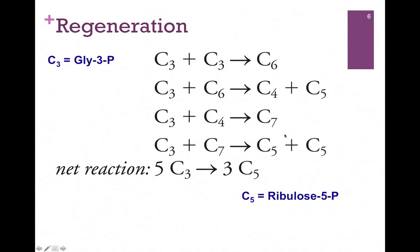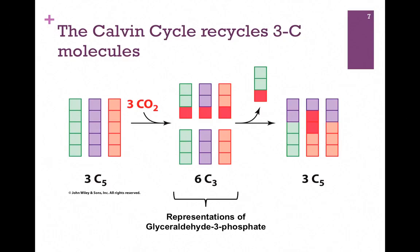Phase 3 is regeneration, where we regenerate our starting material, ribulose bisphosphate. The end product of regeneration is initially ribulose-5-phosphate, a 5-carbon compound, starting from the glyceraldehyde-3-phosphate produced in the reduction reactions. The C3 molecules — all glyceraldehyde-3-phosphate — are combined and rearranged in a series of involved steps, illustrated here. You don't need to know the details, simply the ratio: it takes 5 molecules of glyceraldehyde-3-phosphate to form 3 molecules of ribulose-5-phosphate.